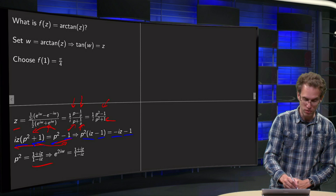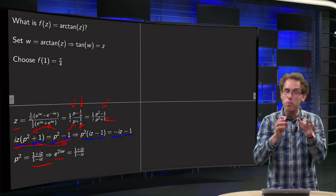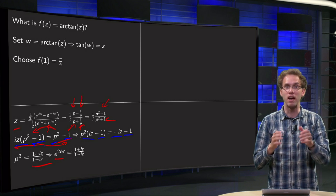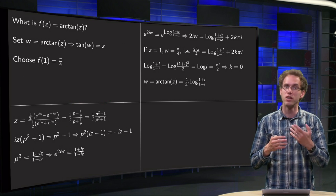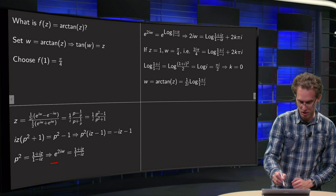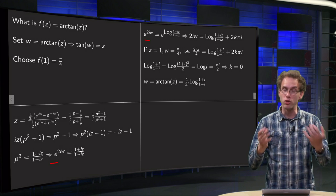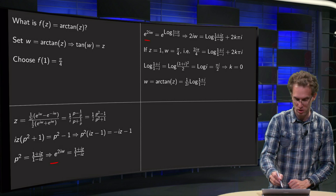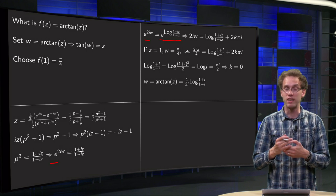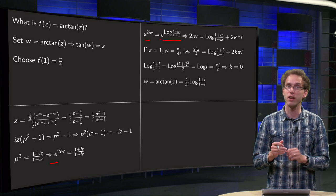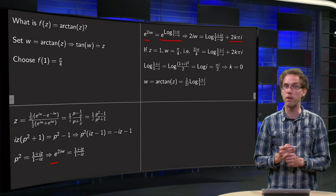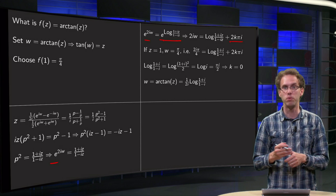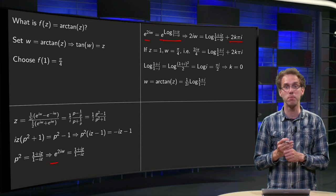Remember, p was e to the power iw, so p squared equals e to the power 2iw, so we almost have our w in terms of z. We only have this exponential — we have to be a bit careful when taking logarithms. On the left hand side we leave e to the power 2iw; on the right hand side we turn this into an exponential as well: the expression equals e to the power log of the expression. Then we can cancel the exponentials, taking into account the factor 2k pi i, since e to the power a equals e to the power b implies a equals b plus a multiple of 2 pi i, because e to the power 2k pi i equals 1.